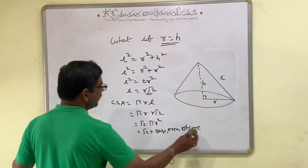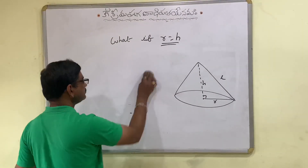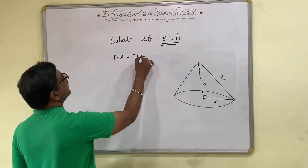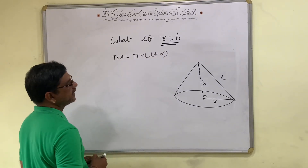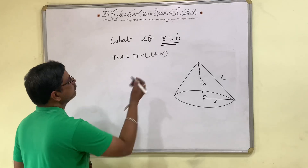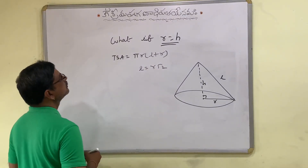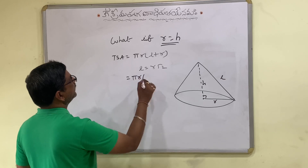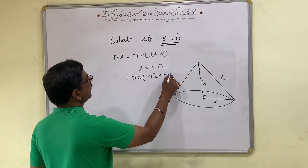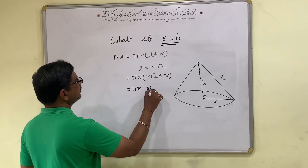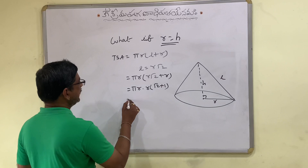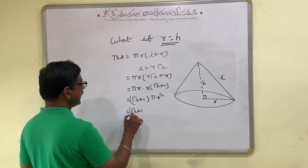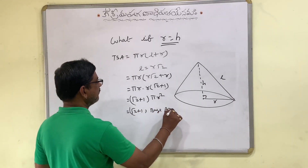Now let us see the total surface area of cone. Total surface area of cone is πR into L plus R. Since L equals R root 2, we insert R root 2 in place of L. So it becomes πR into R root 2 plus R. Taking R common, the remaining factor is root 2 plus 1. That means the total surface area is root 2 plus 1 times πR square, which equals root 2 plus 1 times the base area of cone.